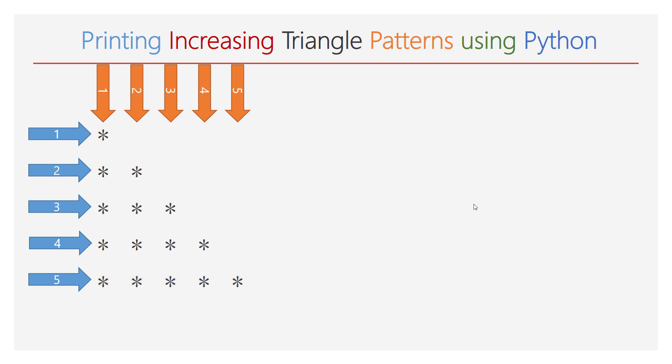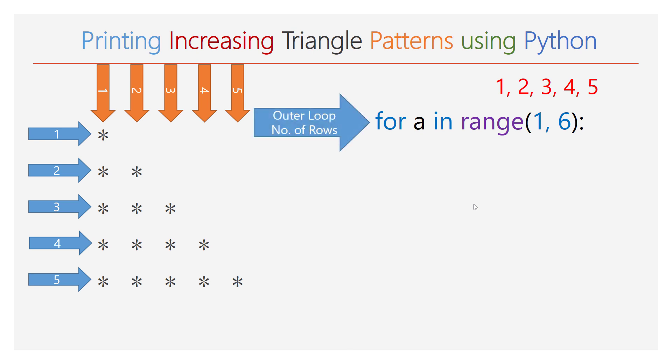We have counted the number of rows and the number of columns — it is a 5 x 5 pattern. The outer for loop has a range of 1 to 6, so it will iterate five times. The outer for loop will decide the number of rows to be printed.